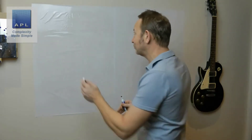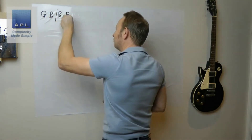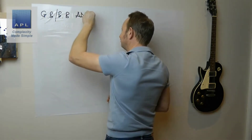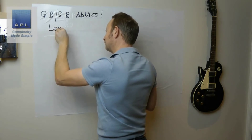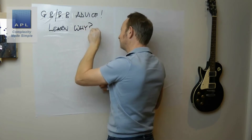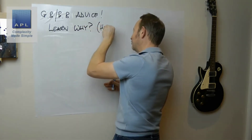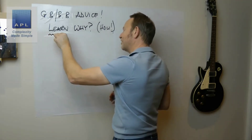Welcome to Complexity Made Simple, my name is Paul Allen. The subject of today's video is advice for Green Belts and Black Belts. And here's what I want to say to you: learn the why instead of the how.